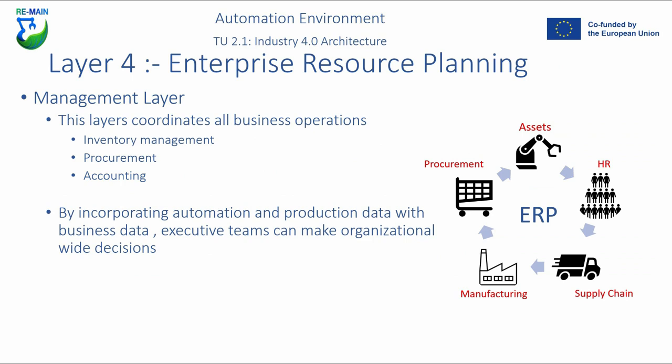Finally, at the very top of the pyramid in layer four, you have your ERP system — the management layer. This layer can coordinate all business operations such as inventory management, procurement, and accounting, and integrate that with the MES layer below it. By incorporating all this automation and production data with business data, executive teams can make organization-wide decisions, as they have a complete view of not just the business processes but also the production processes — allowing them to combine both sets of data.